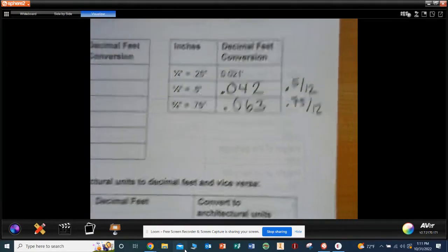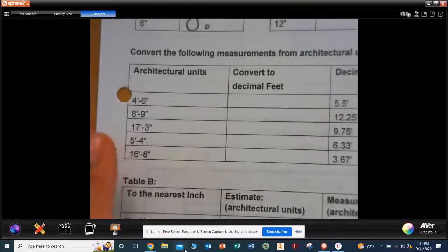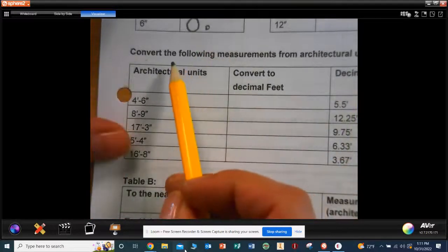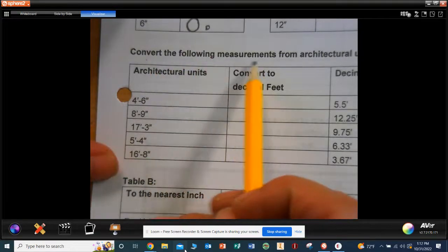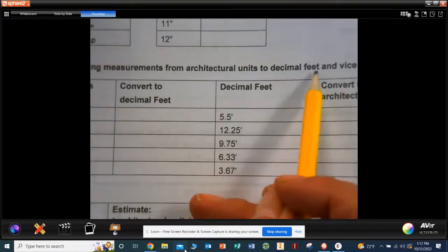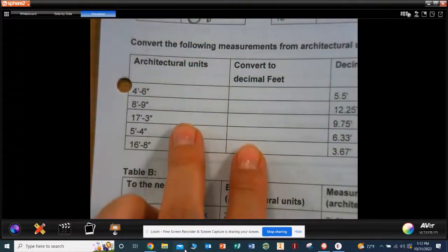All right, next part. Convert, boys and girls, ladies, convert the following measurements of architectural units to decimal feet and vice versa. Okay? So we'll do these first two here, these two, which is different than the next two. This is 4 feet 6 inches.